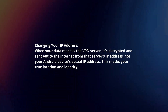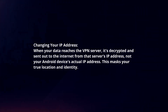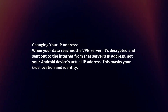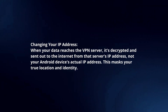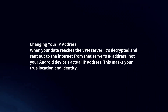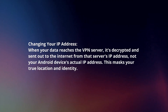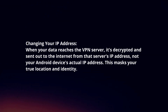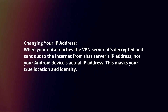Changing your IP address: When your data reaches the VPN server, it's decrypted and sent out to the internet from that server's IP address, not your Android device's actual IP address. This masks your true location and identity.